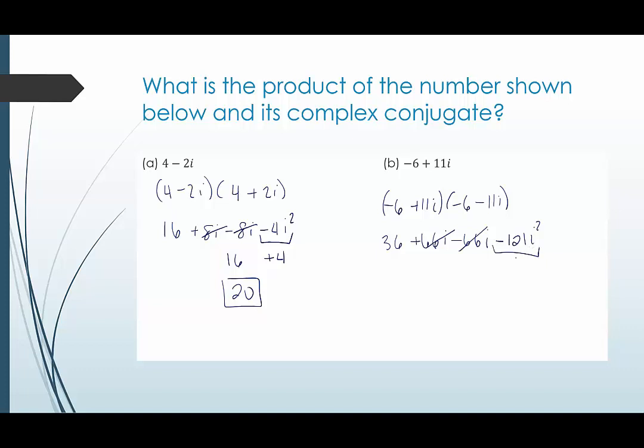This negative 121, well, i squared will become negative one. So we multiply that. Negative times negative becomes positive. We get 36 plus 121, which is 157.